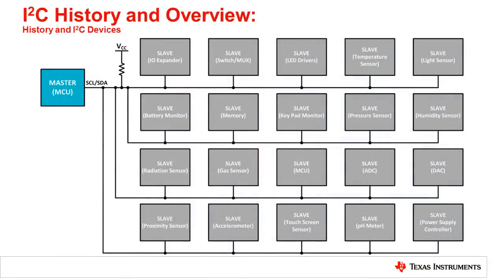The Inter-IC interface, I2C, was created in 1982 to address the need for a simple, robust, low-cost protocol for communicating between ICs while using the least amount of pins. As the variety of peripheral parts increased and the benefits of the I2C interface became obvious to system designers, the I2C interface rapidly increased in popularity and was widely adopted shortly after it was released as a standard.